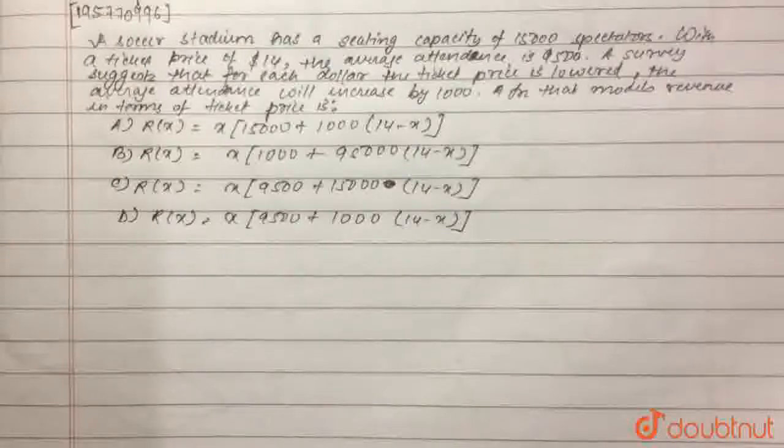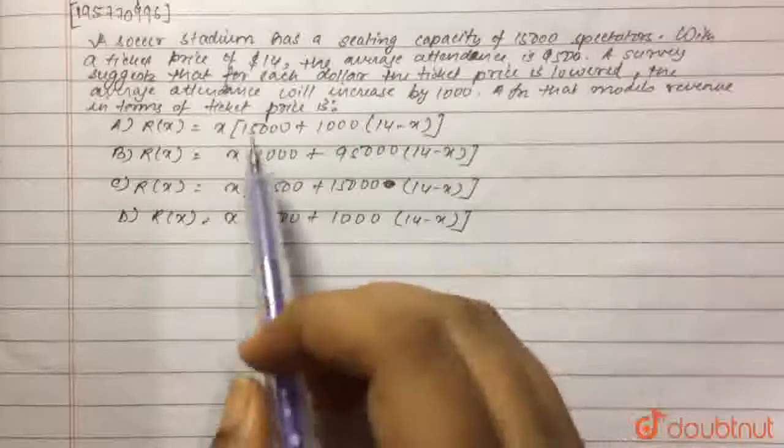A survey suggests that for each dollar the ticket price is lowered, the average attendance will increase by 1,000. So we need a function that models the revenue in terms of the ticket price.